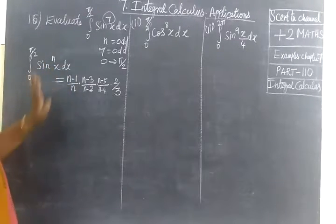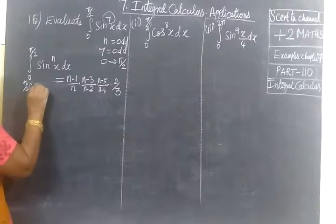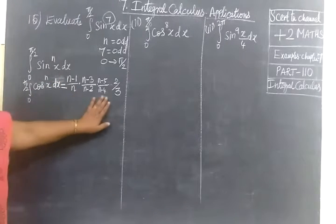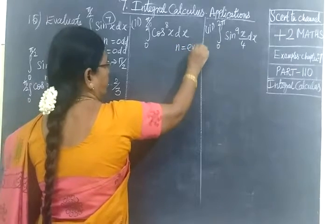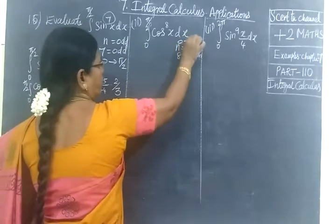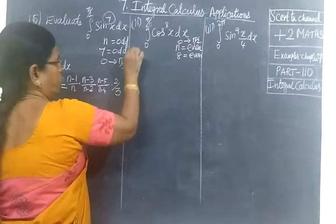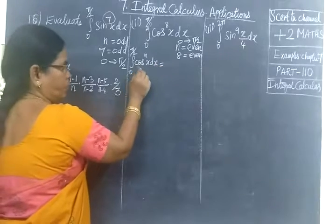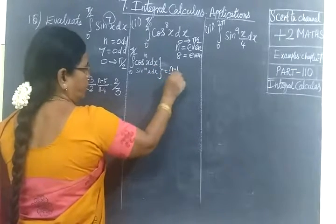Sine power nx dx, cosine power nx dx - same formula applies. In that even method, so if n equals even, here 8 is even, so you are applying the formula limit 0 to π/2. Integral 0 to π/2 cos power nx dx, this will be sin power nx dx. We are writing